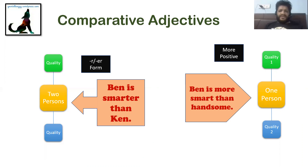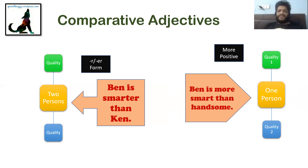The first case: when you have one quality and you're comparing two persons on the basis of that quality, you use the '-er' form. For example, 'Ben is smarter than Ken' — here smartness is standalone and you're comparing two people. But suppose you're talking about one person and comparing two qualities in him. In that case, even though the comparative of 'smart' is 'smarter,' you use 'more + positive adjective' instead. So you say 'Ben is more smart than handsome.'